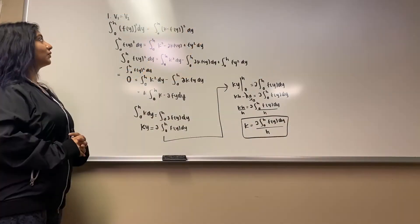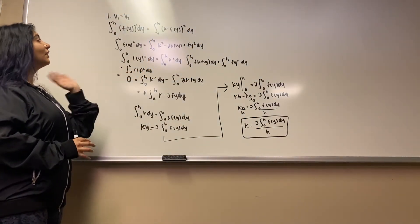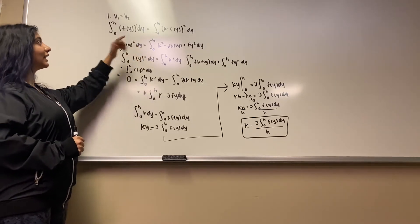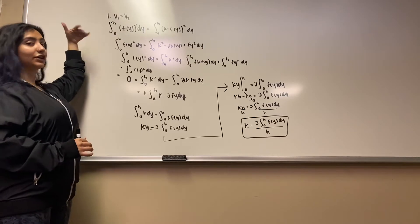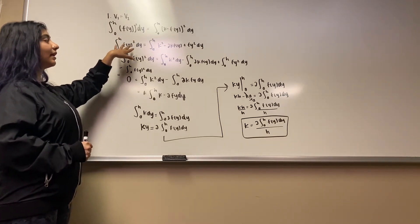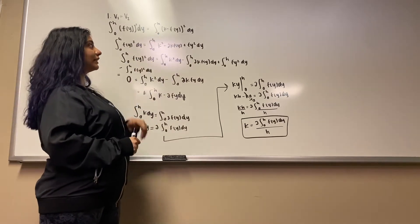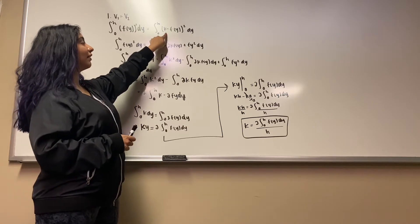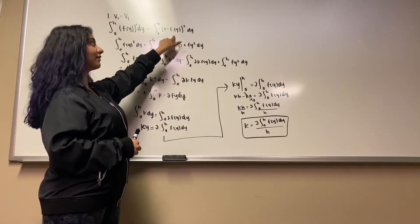For question one, we knew we wanted the volume of cup A to be equal to the volume of cup B. So we found our equations with respect to the y-axis and integrated from 0 to H, because H is the height of the cups. Our first equation is the integral of f(y) squared dy, and our second equation is the integral of k minus f(y), squared dy, because we wanted to find the volume of the second cup. That's why we subtracted out the volume of the first cup.